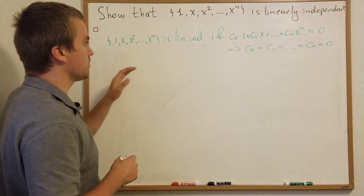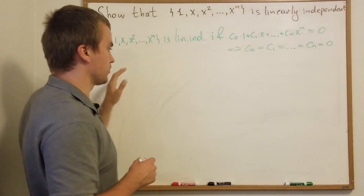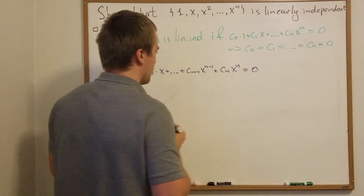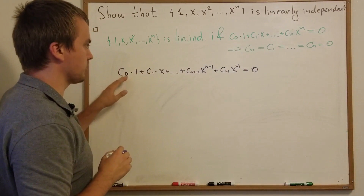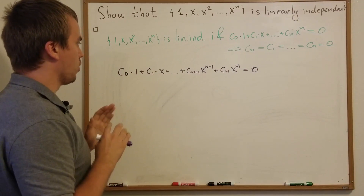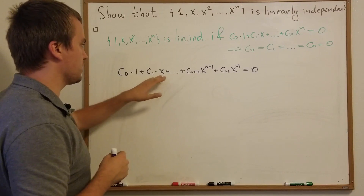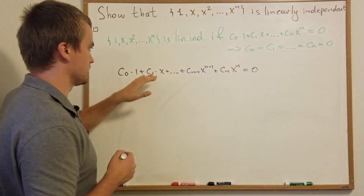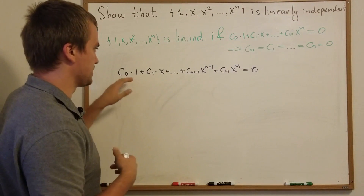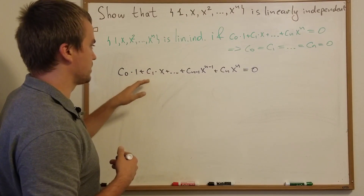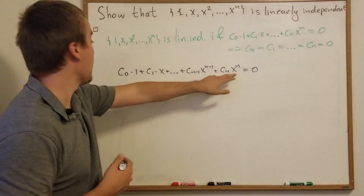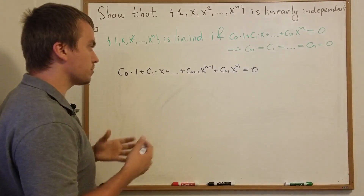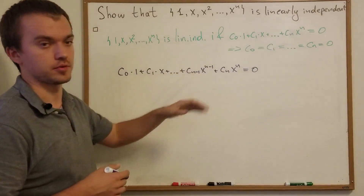So let's start by writing this equation. And let's take a look at this equation for a second. One approach is to take different values for x, plug them into the system, and try to solve for the c's — we'd plug in n+1 different x values and get a system of equations. That's a good approach, but I want to show you another approach.